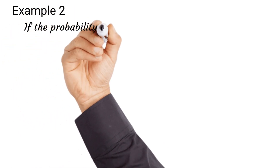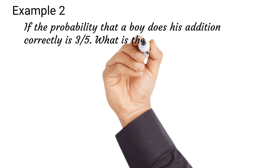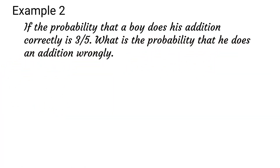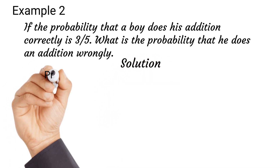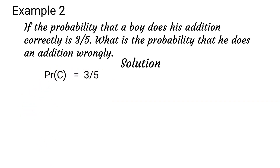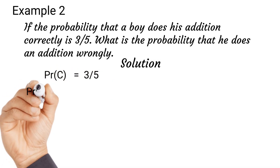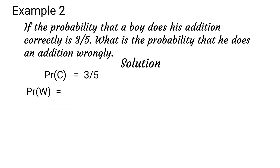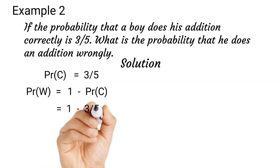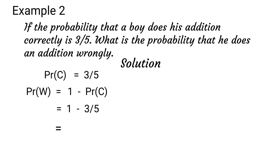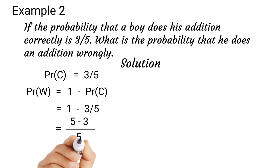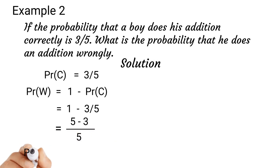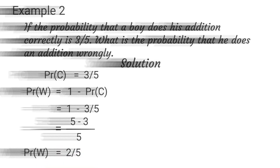Example two: if the probability that a boy does his addition correctly is 3 over 5, what is the probability that he does the addition wrongly? Solution: we are given the probability of doing the addition correctly as 3 over 5. The probability that he does the addition wrongly will be 1 minus 3 over 5. We get 5 minus 3 over 5 using the LCM, which gives us 2 over 5 as our answer.